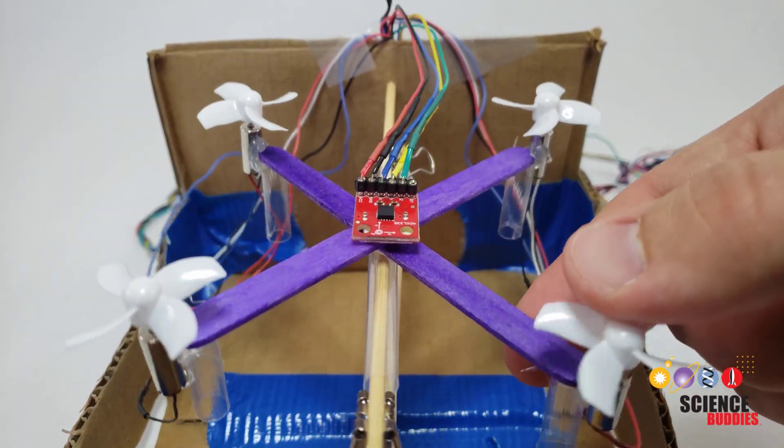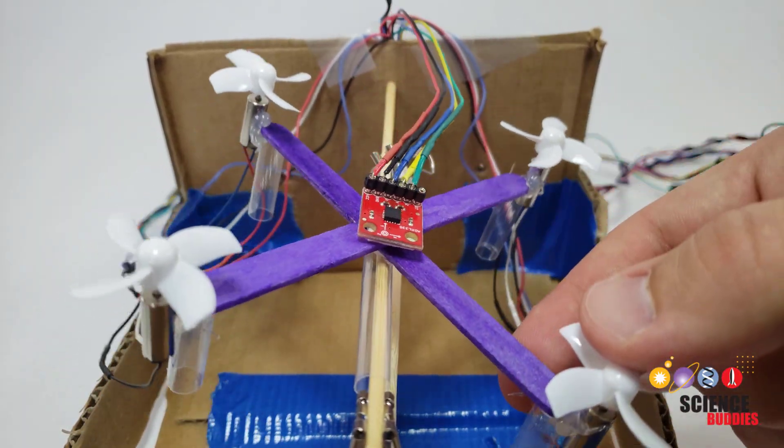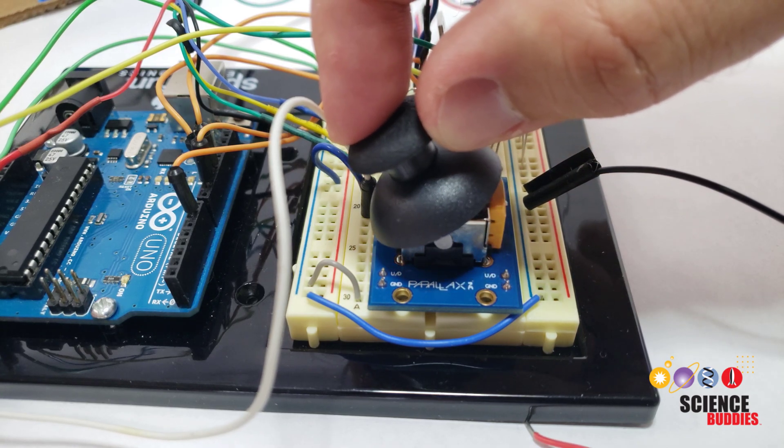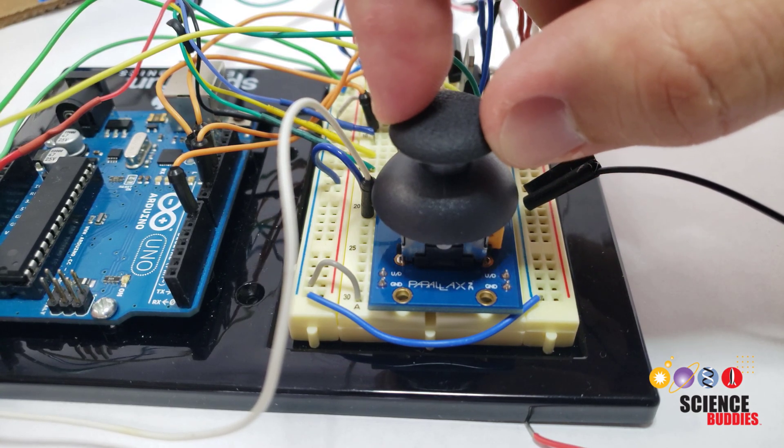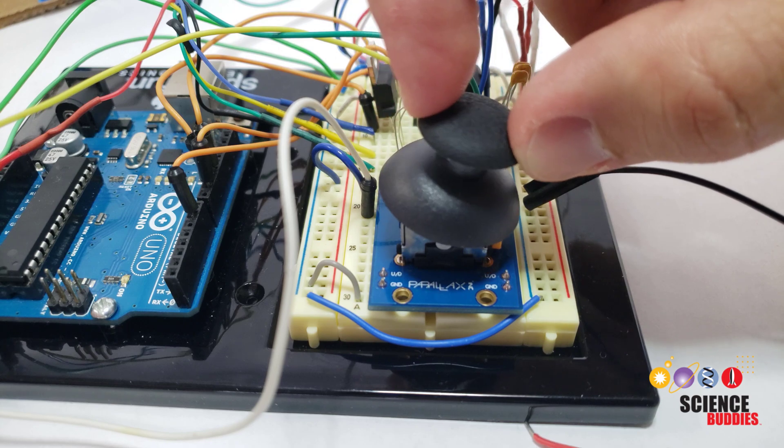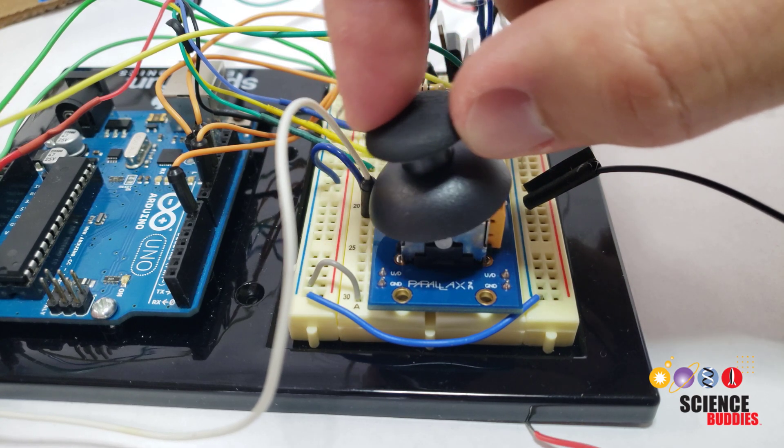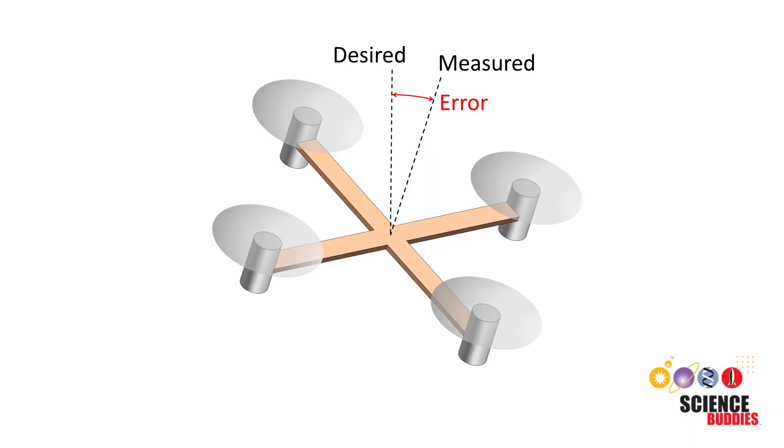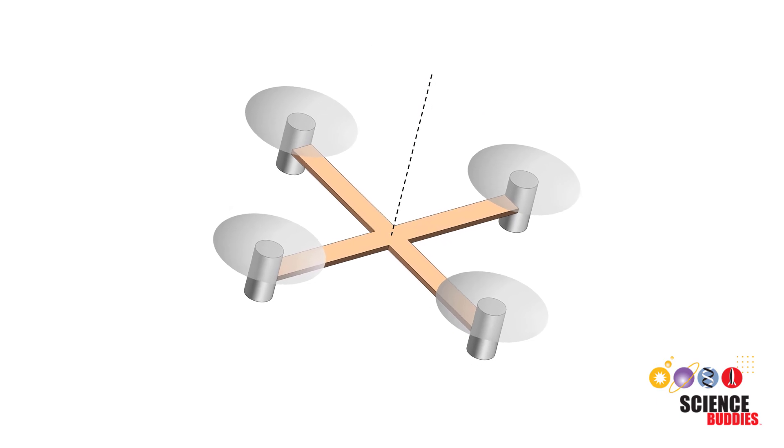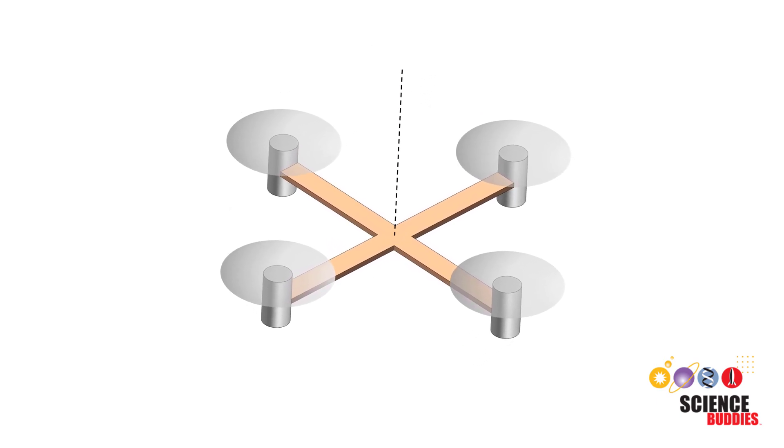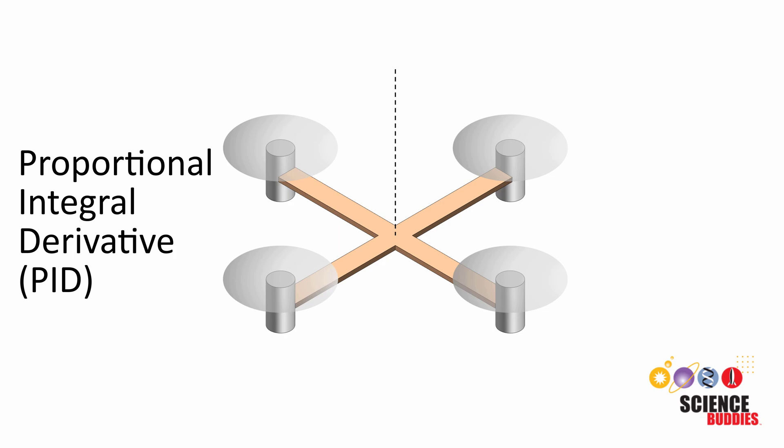An accelerometer mounted on the drone calculates its angle of tilt. Pushing on a joystick sets the desired angle of tilt. When you let go of the joystick, it returns to its center position so the desired angle is zero. Code running on an Arduino calculates the error or the difference between the desired and measured angle of tilt. It then adjusts the motor speed to reduce this error using a proportional integral derivative or PID controller.